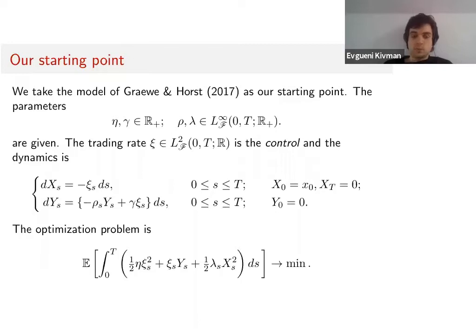This is the optimization problem. We have a cost function. The first term is the cost of the instantaneous price impact—η is the instantaneous price impact parameter. If the trading rate is large, we have a high loss due to instantaneous price impact.